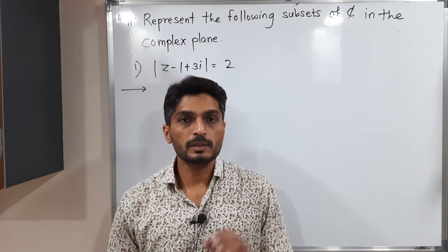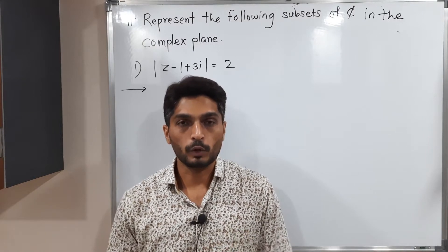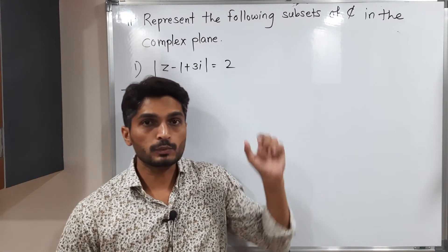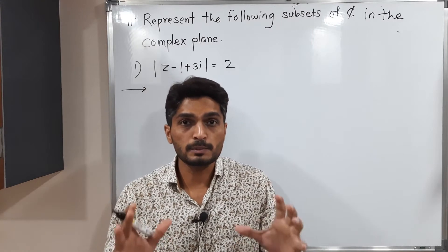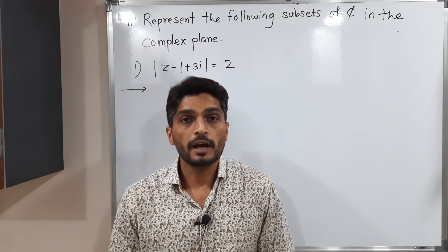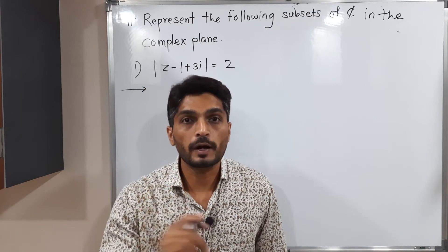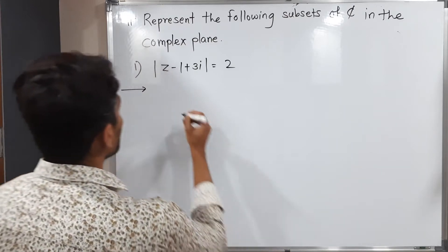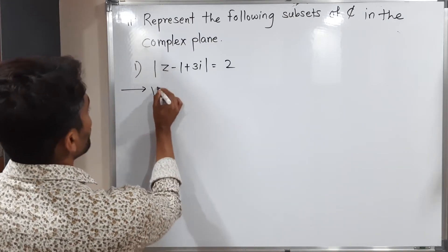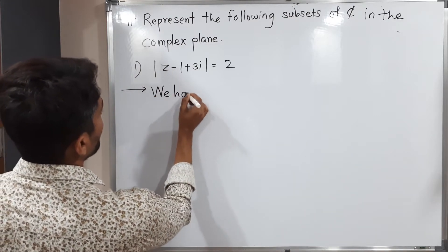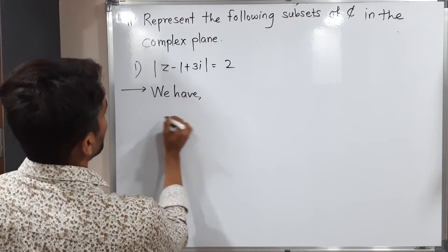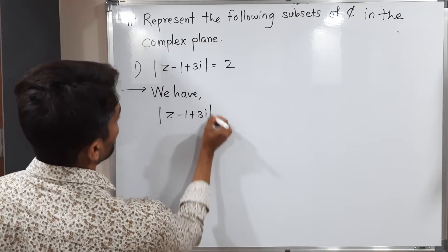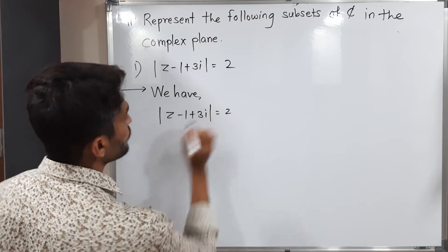Let us find a few subsets of ℂ. Here, as you can see, there is one equation that represents some subset of ℂ and we have to find it. I will start with the given equation: mod(Z − 1 + 3i) = 2.